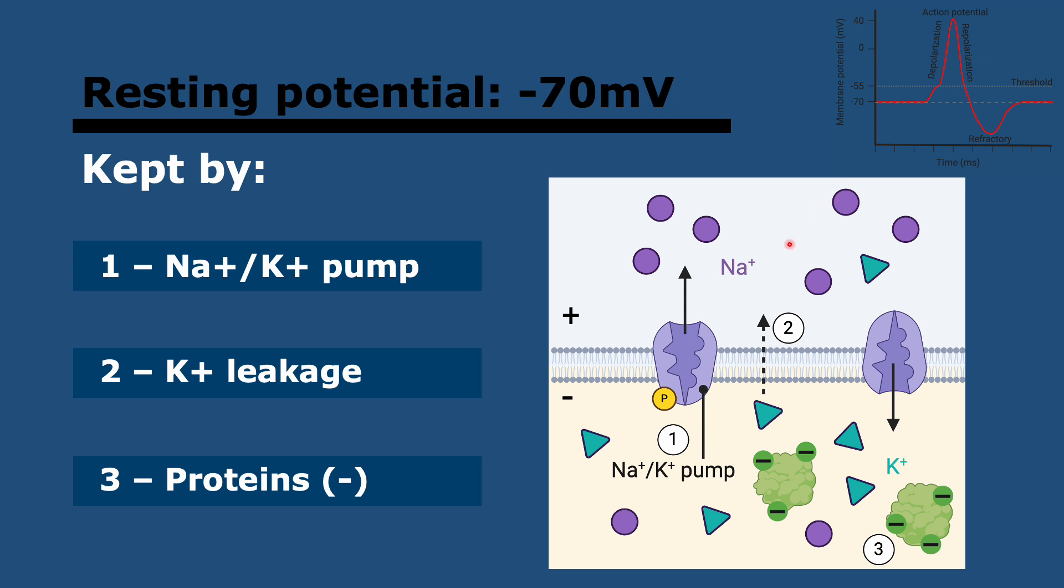In the axon or in the neuron as a whole there is a membrane potential. Membrane potential is an imbalance of net charge, positive and negative charges between the cytoplasm and the fluid outside. The cytoplasm is generally negative compared to the fluid outside, so the membrane potential is normally a negative value.